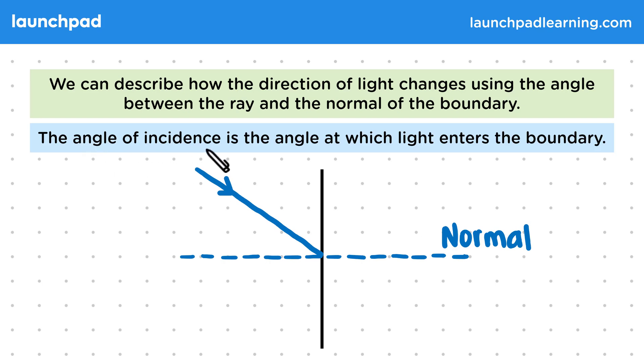The angle of incidence is the angle at which light enters the boundary. So this angle here between the ray and the normal will be the angle of incidence. We can also label this with the letter i.